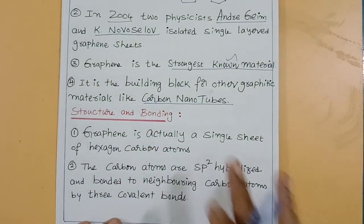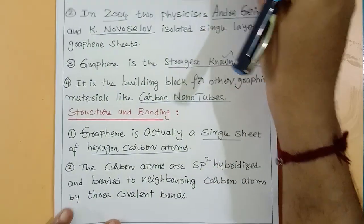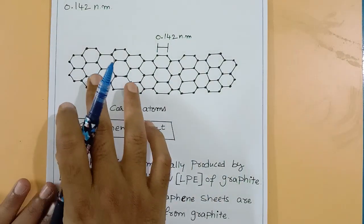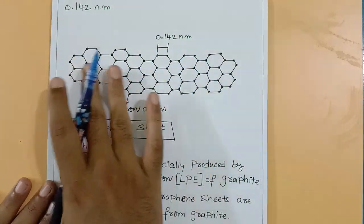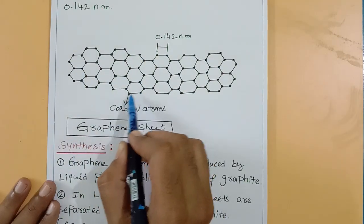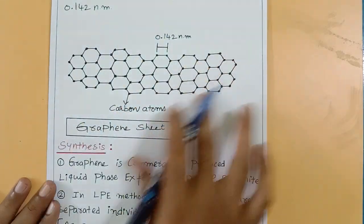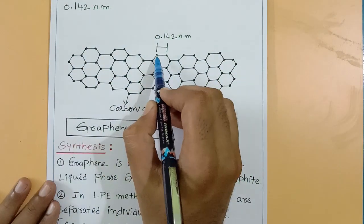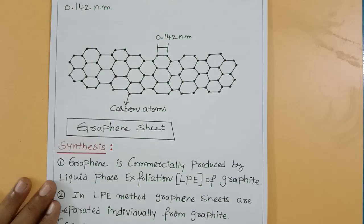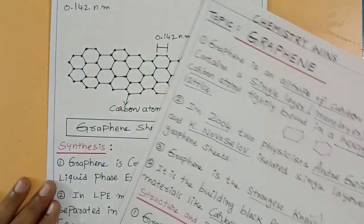Structure and bonding: graphene is actually a single sheet of hexagonal carbon atoms. Here you can see the hexagonal arrangement — small points represent carbon atoms arranged in a hexagonal shape. The bond distance between two atoms is 0.142 nanometers. This is the single-layered arrangement of graphene, and the carbon atoms are an allotrope of carbon.